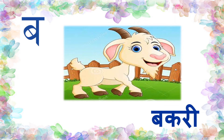The second picture is B — Bakkri. Bursay Bakkri. You know, goat is a domestic animal and it gives us milk. So it's Bursay Bakkri.